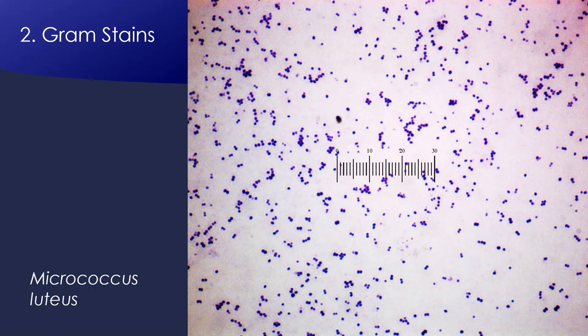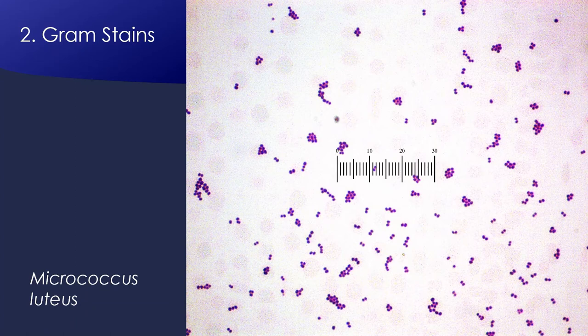Our third sample is Micrococcus luteus — you can see these are also Gram positive and they form little cocci. 'Coccus' means sphere, so you can see these are tiny spheres. Here's another image — one thing we see quite frequently with Micrococcus are tetrads, meaning groups of four, which is pretty common with Micrococcus. It kind of depends on how concentrated your actual sample is.